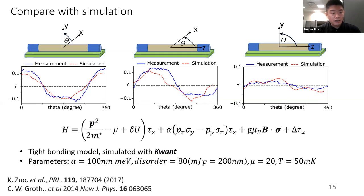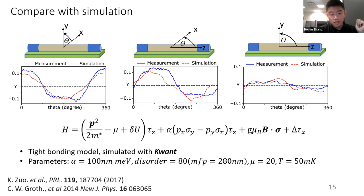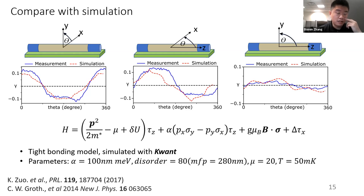To understand this, we performed a simulation using Kwant code based on a tight-binding model. This model considers the orbital effect in momentum, spin-orbit interactions, and disorder, giving a mean free path equal to 280 nm, close to our actual measurements. Setting the chemical potential to give three conduction bands and T equal to 50 mK, we find all simulation results have pretty good agreement with our measurement results. This means we can explore further using the simulation.